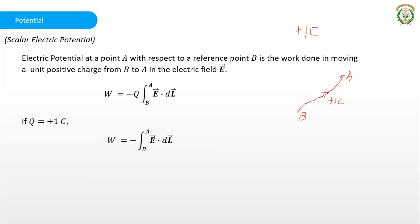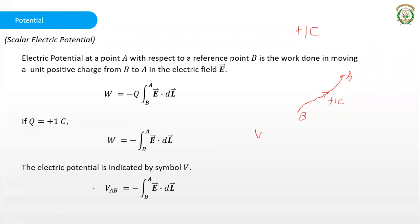Potential is indicated by the symbol V. So we write it as V_AB, which means the electric potential at point A with respect to reference point B: V_AB = minus the integral of E·dl from B to A. The unit of potential is volts, represented by capital V.